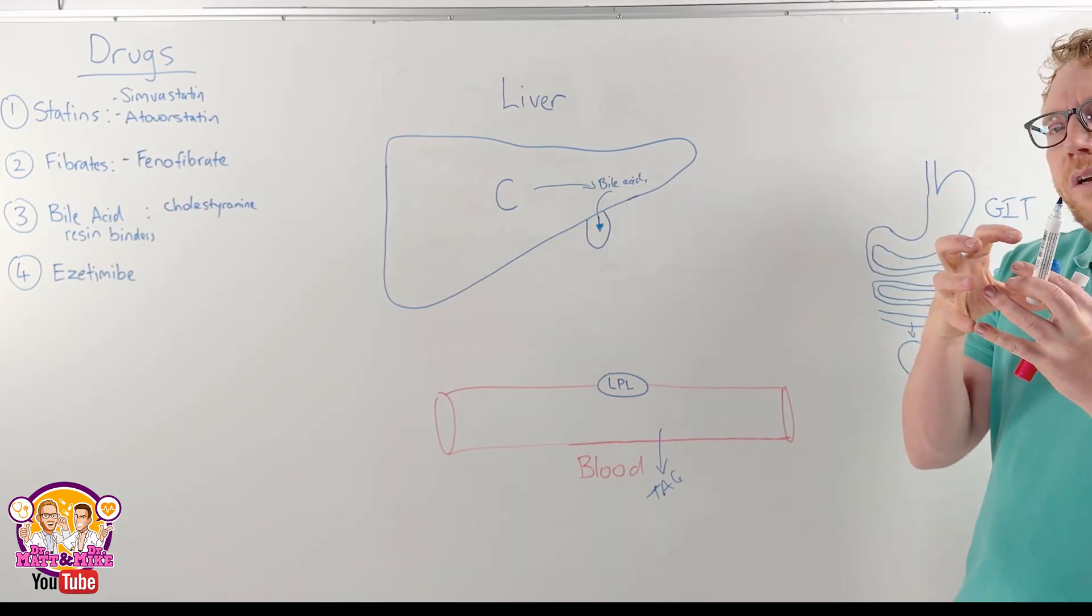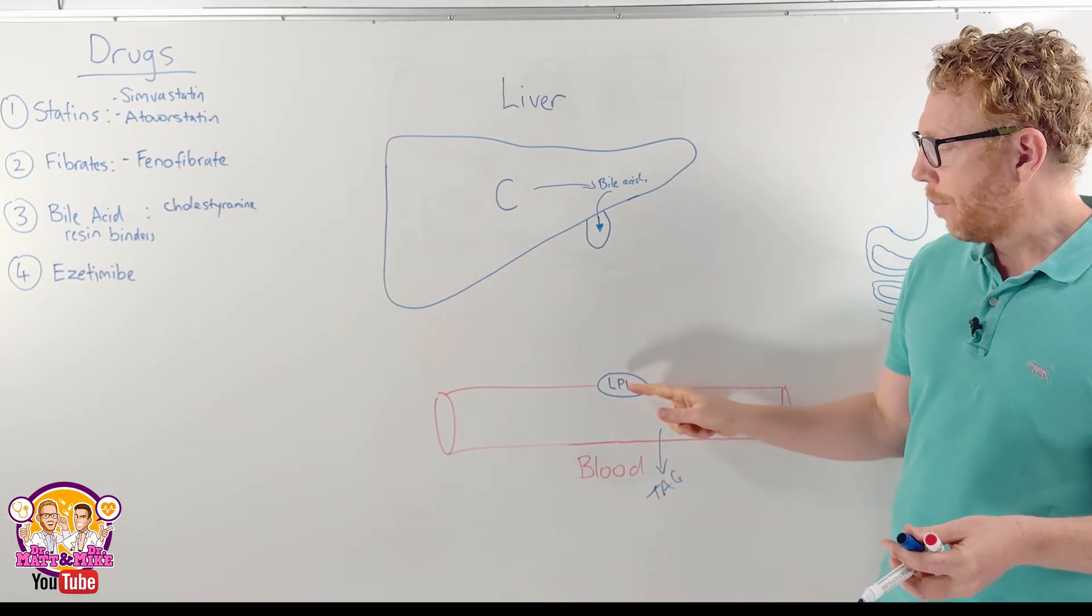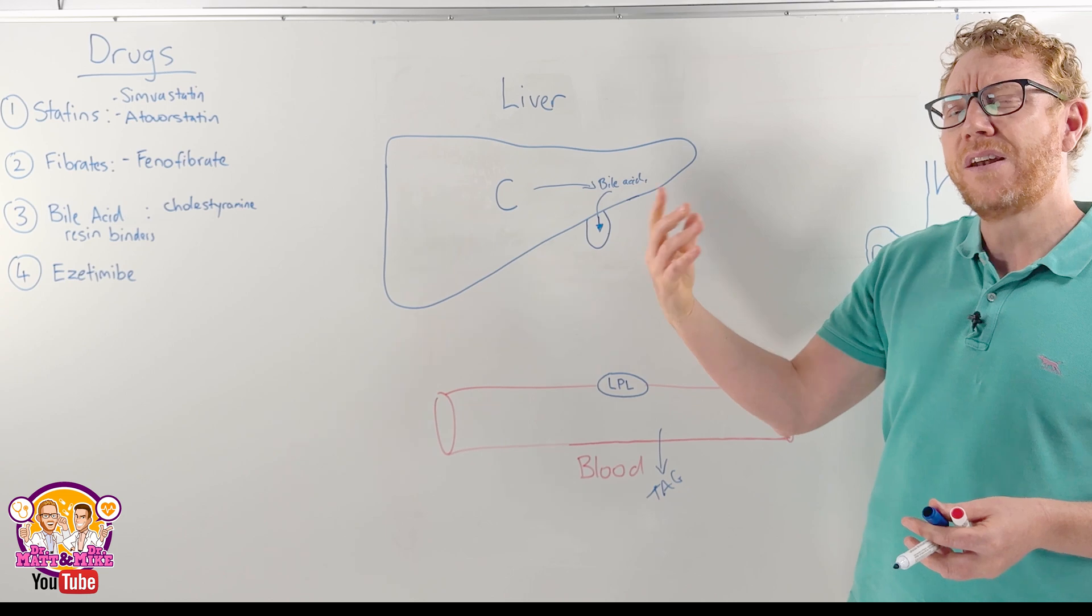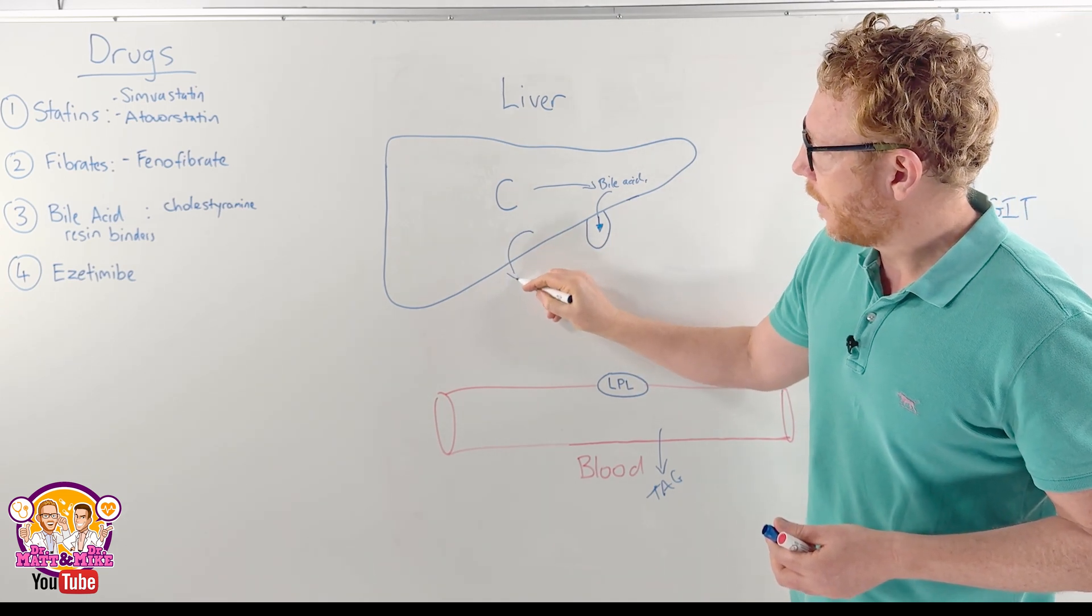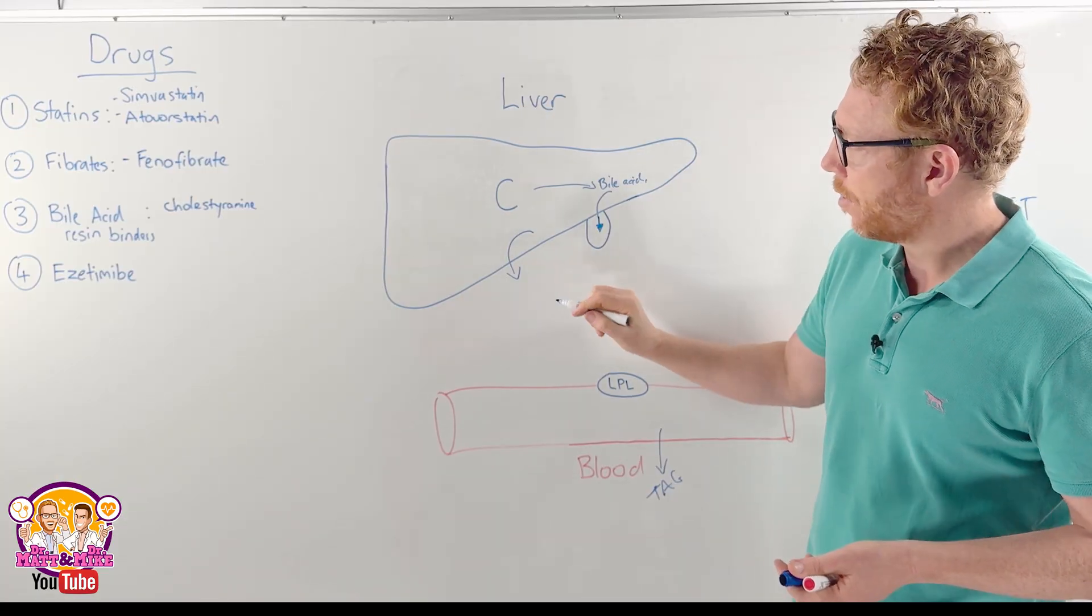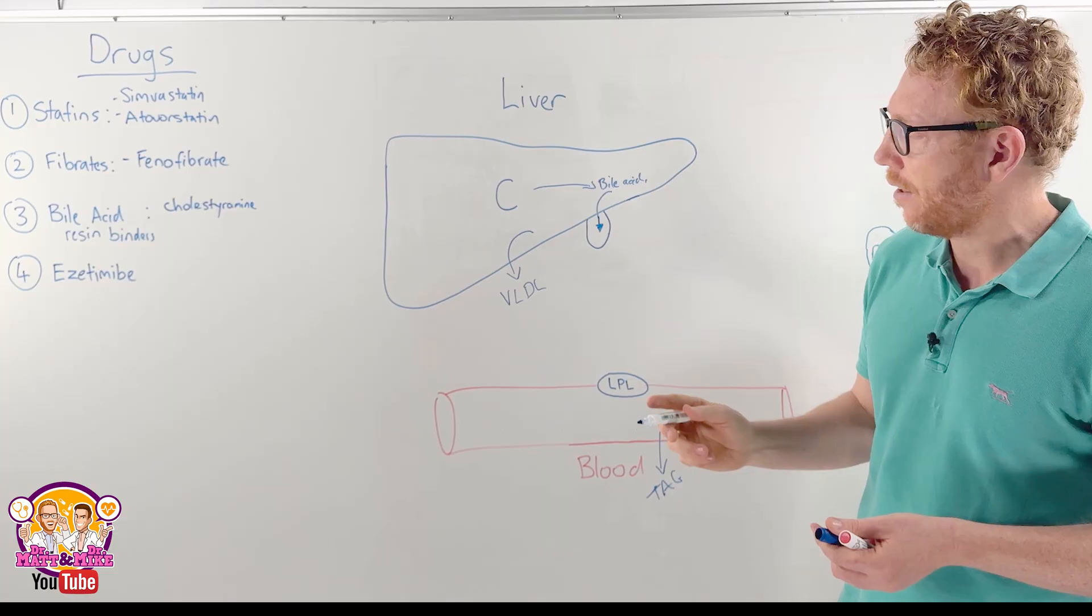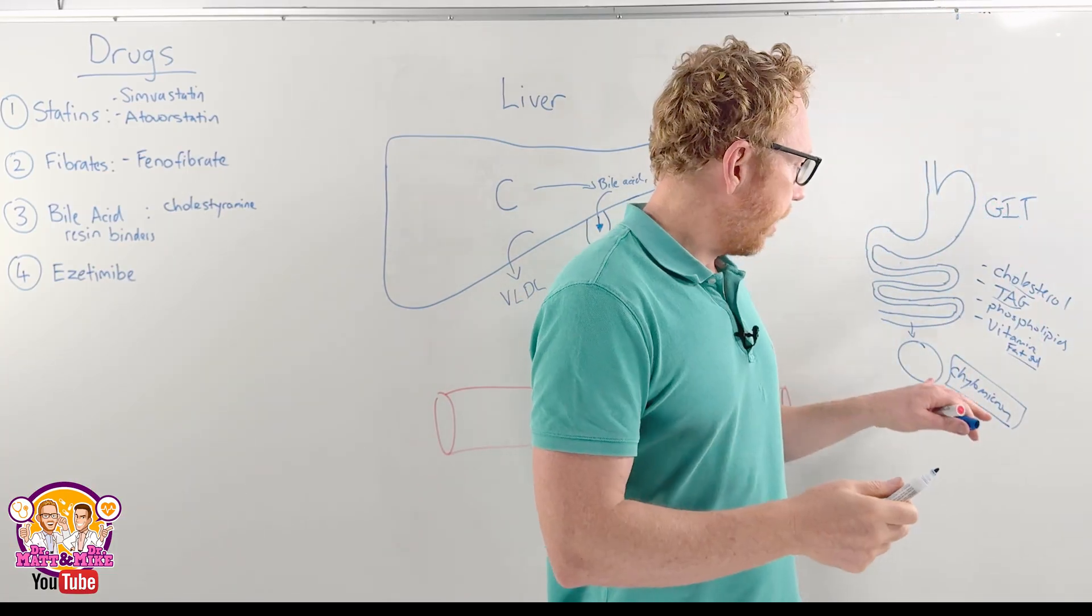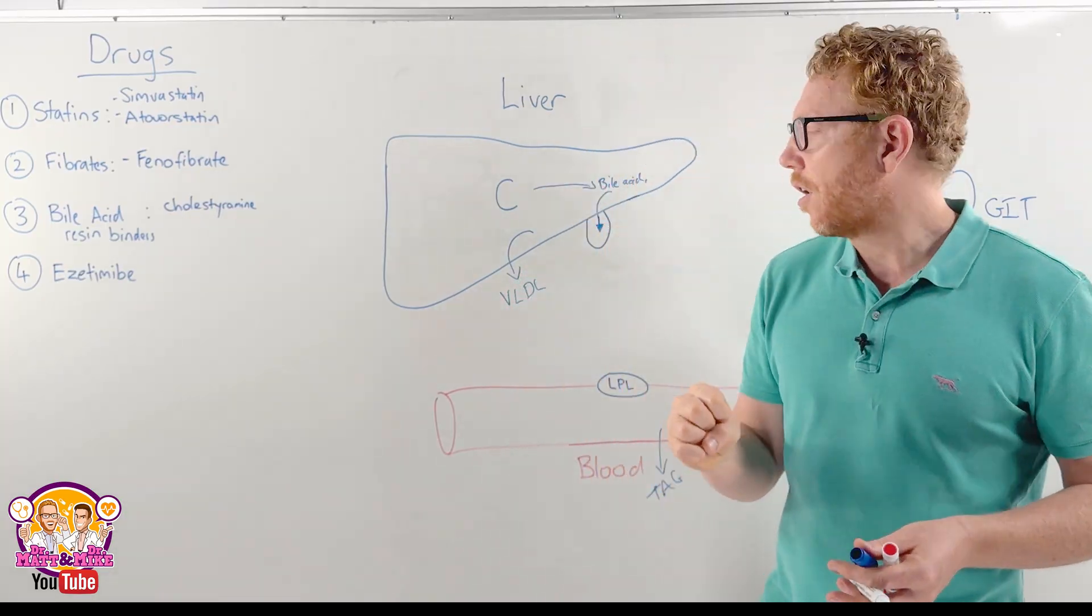Now the chylomicrons will slowly shrink in size as we're pulling out the triglycerides, but eventually the chylomicron will be returned back to the liver. The liver will make some modification but fairly quickly it will then excrete another slight modification of that chylomicron to something we call VLDL, very low-density lipoprotein. Very similar in composition as a chylomicron, it's probably just slightly smaller.